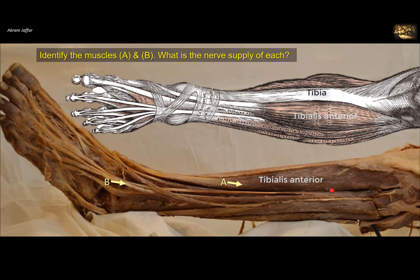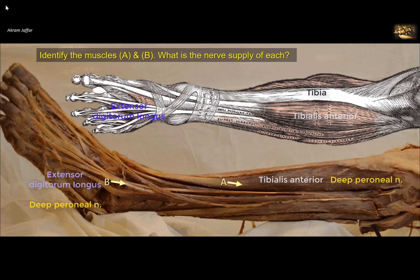As a member of the anterior compartment of the leg, tibialis anterior is supplied by the deep peroneal nerve. The other muscles of the anterior compartment: we can see this muscle here — following the tendon, it goes to the big toe — this is extensor hallucis longus. And this muscle here, if we follow it downwards, splits into four tendons — this is extensor digitorum longus, with tendons attached to the lateral four digits. The fourth member's tendon spreads to attach to the fifth metatarsal bone, characteristic of peroneus tertius. Muscle B is extensor digitorum longus, and as a member of the anterior compartment, it is supplied by the deep peroneal nerve, a branch of the common peroneal.